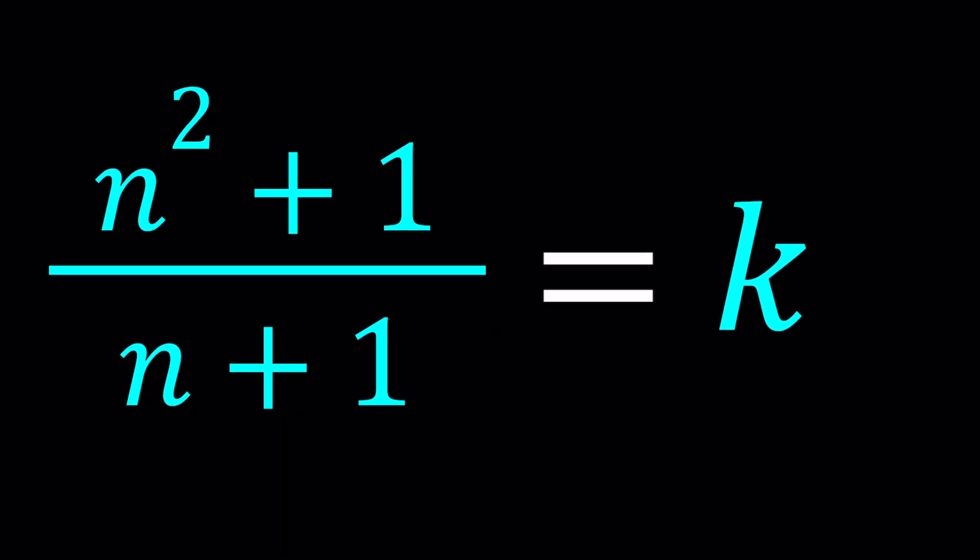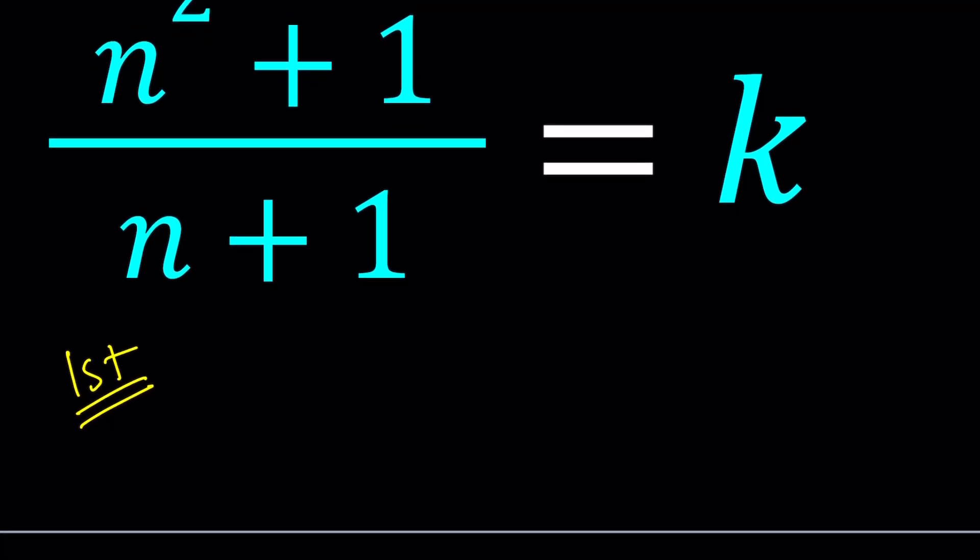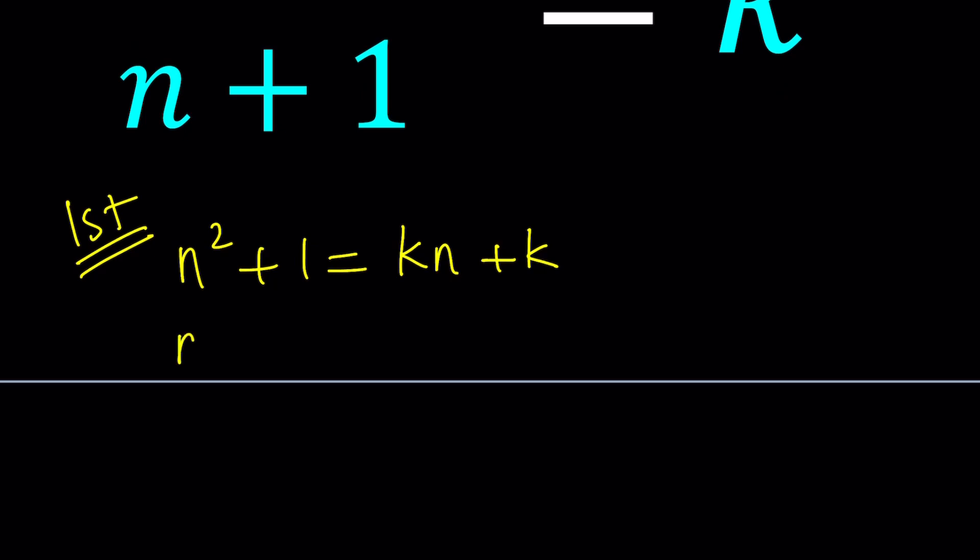So for my first method, I'm going to do probably what is not that typical. I'm going to cross multiply. That's going to give us n squared plus one equals kn plus k. And then I want to put everything on the same side: n squared minus kn plus one minus k equals zero.